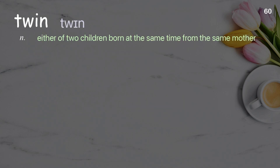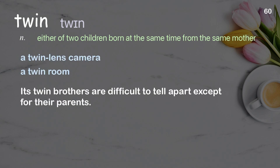Twin: either of two children born at the same time from the same mother. Examples: a twin lens camera, a twin room. Its twin brothers are difficult to tell apart except for their parents.